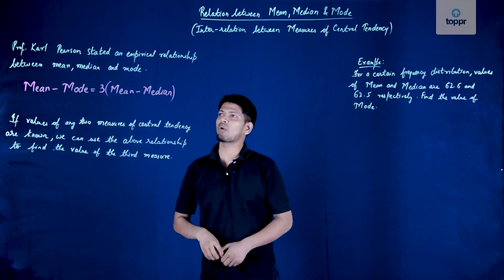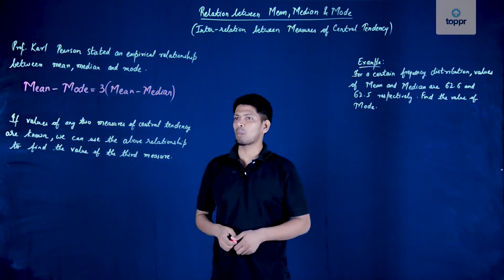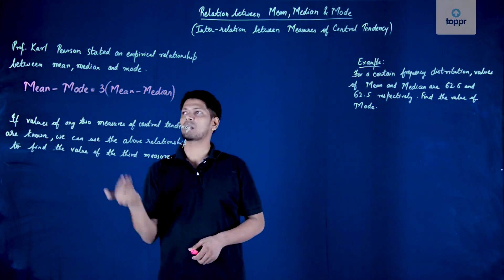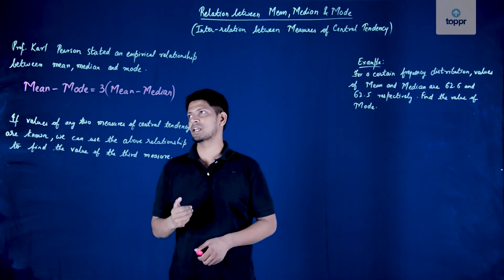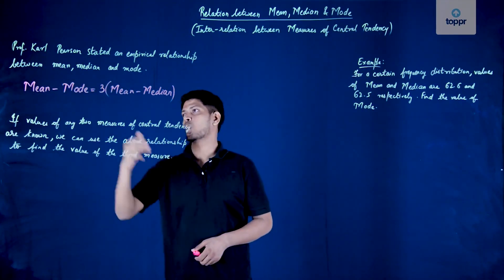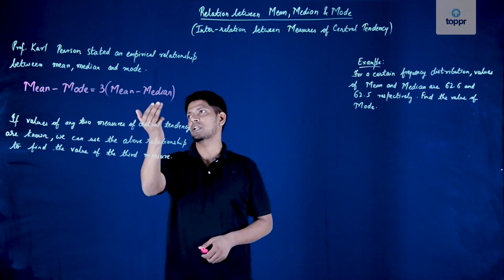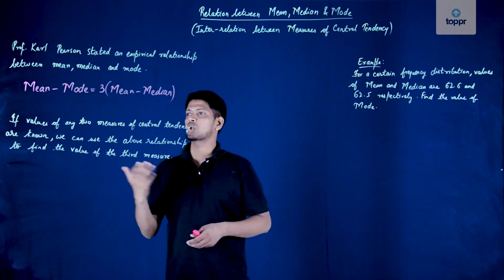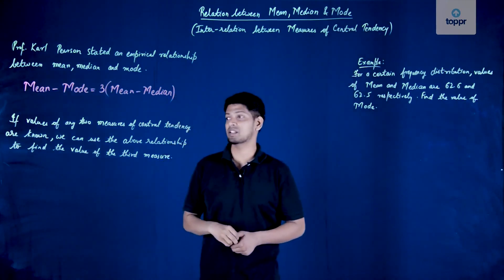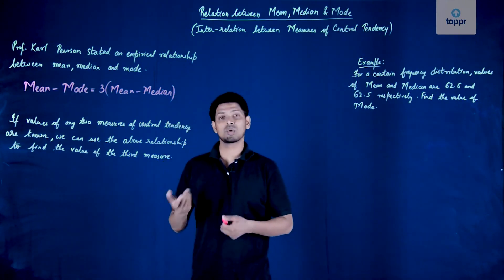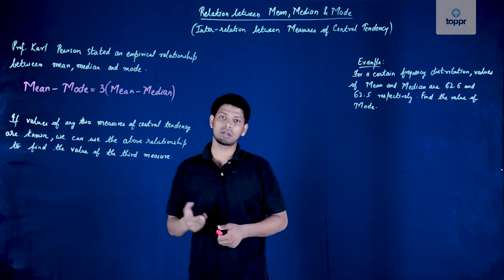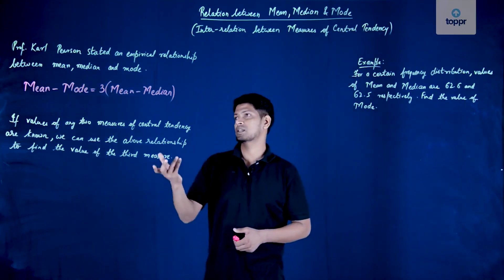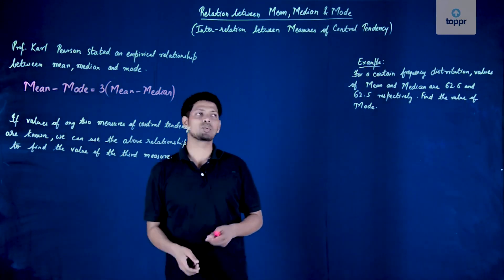If the value of any two measures of central tendency are known — for example, if you know mean and mode, you can find median. If you know mean and median, you can find the third measure. Let us understand this with an example.